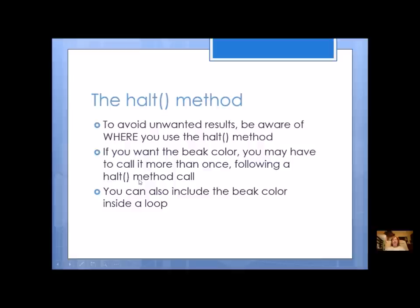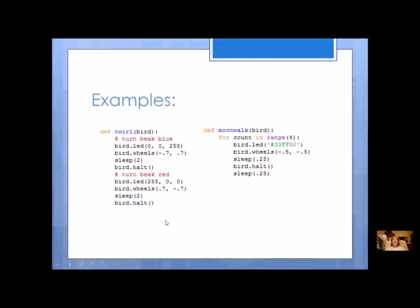And you can also put it inside a loop. So here's a couple of examples. Here's from the first one: I turned it blue, I have the HALT, now I'm going to turn it red before I do a HALT again. So you just might have to call the beak color more than once if you want to keep having beak color.